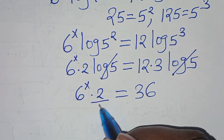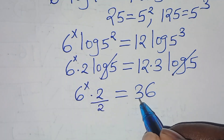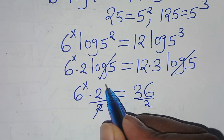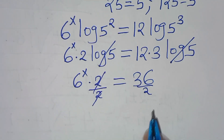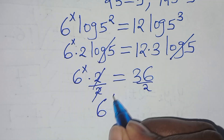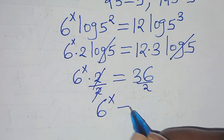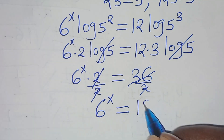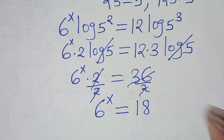Let's divide both sides by 2 from here, so that now 6 to the power of x is equal to 36 divided by 2, which is equal to 18.